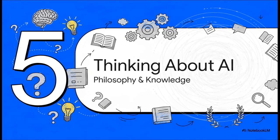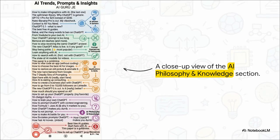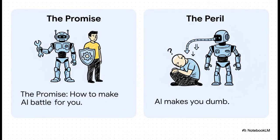Let's take a breath. We're going to step back from the practical, hands-on stuff for a second and head up to the summit view. Our fourth major stop is all about the bigger picture — the philosophy, the big debates, and all the profound questions that AI is bringing to the surface. This part of the map is really here to encourage us to think critically. It's not just about using AI, it's about understanding its impact, touching on everything from the idea of training your own models to how this technology might be fundamentally changing the very way we think and learn. This captures the central tension in the AI world perfectly. On one side, you've got articles about how to make AI battle for you, framing it like a powerful ally in your corner. But on the other side, you've got cautionary tales like how ChatGPT makes you dumb. The truth, as it usually is, is probably somewhere in the middle, and this map does a great job of inviting us to consider both sides.